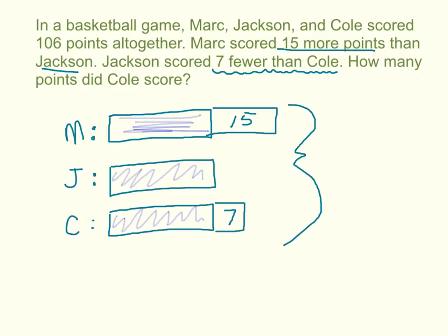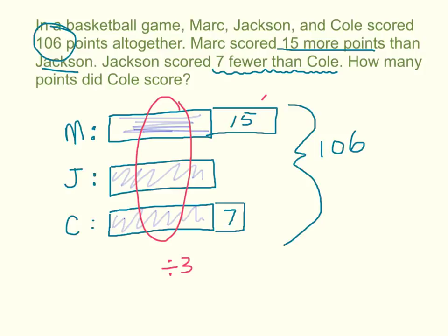It's important that I have those first 3 equal blocks, because if I can get a number that tells me what these 3 blocks are all together, I can divide by 3 to get what 1 block is. To do that, I have to first get rid of the extras — I can't include them in my division because these bars are not the same size. We're told that altogether the boys scored 106 points. So I subtract 15 and 7 from 106. I can group those two together to get 22, and 106 minus 22 equals 84.